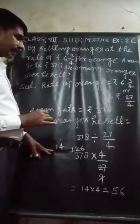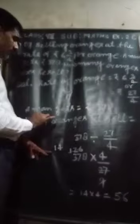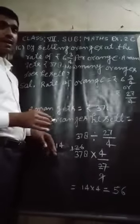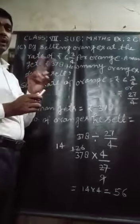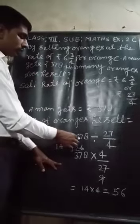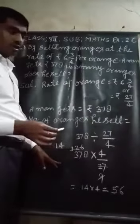After that, we have to divide to find the number of orange he sells. To find the number of orange, both values should be divided. So, 378 divided by 27 upon 4.